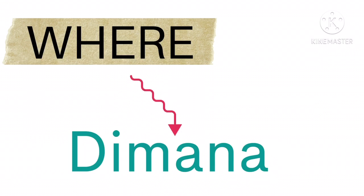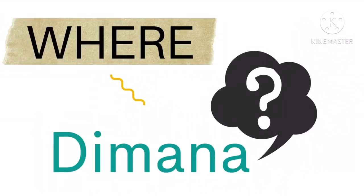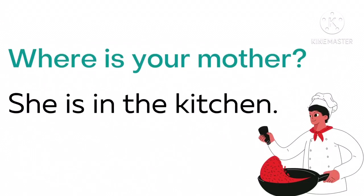In Bahasa Indonesia, 'where' means 'dimana' — dimana artinya adalah dimana. Kalau di dalam sebuah kalimat ada kata 'where' atau 'dimana', maka itu adalah sebuah kalimat pertanyaan. Dan untuk menjawab pertanyaan ini, kita memerlukan adverb of place, atau dalam bahasa Indonesia artinya adalah keterangan tempat.